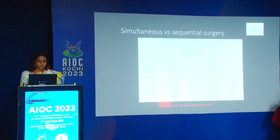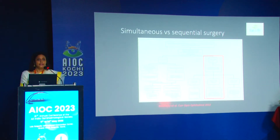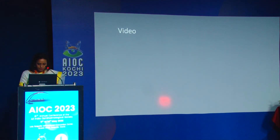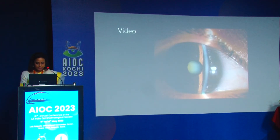If central corneal thickness is less than 640 microns and endothelial cell density is less than 500, a combined procedure is definitely needed. If it is less than 1000, cataract alone or combined may be chosen, but the possibility of a future combined procedure must be explained. If endothelial cell density is more than 1000, cataract surgery alone can be safely performed. We chose to do a combined procedure for this lady.